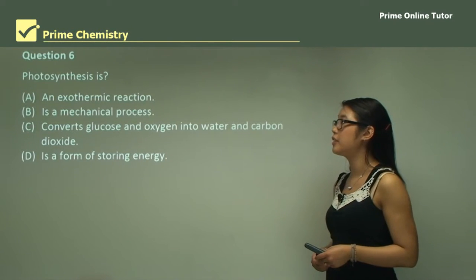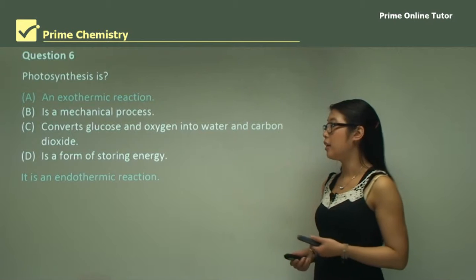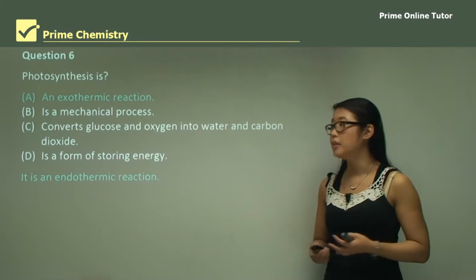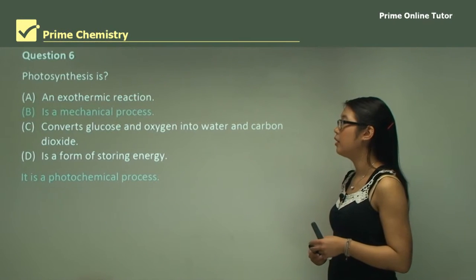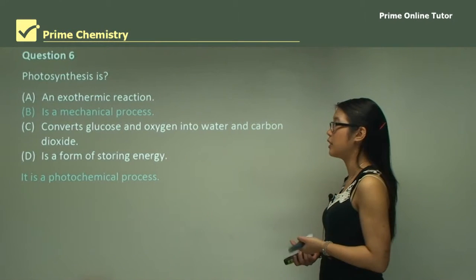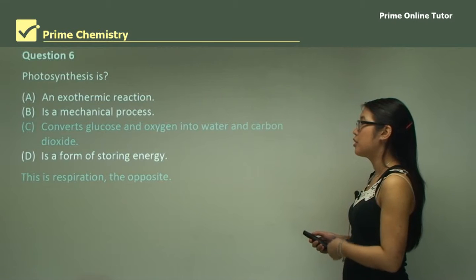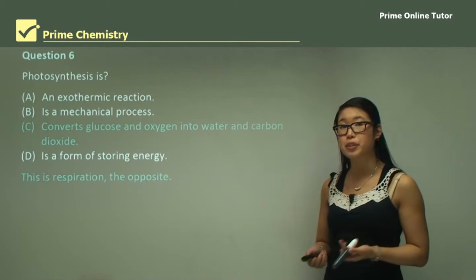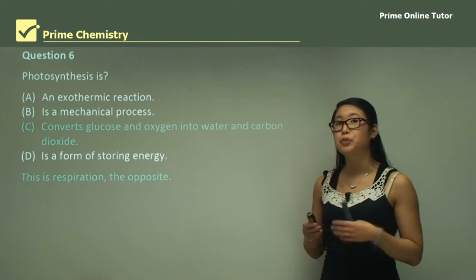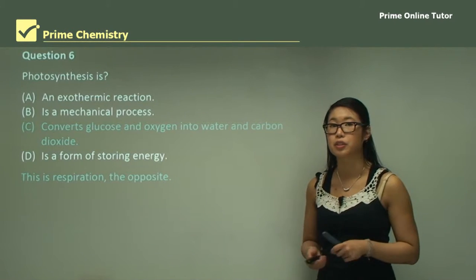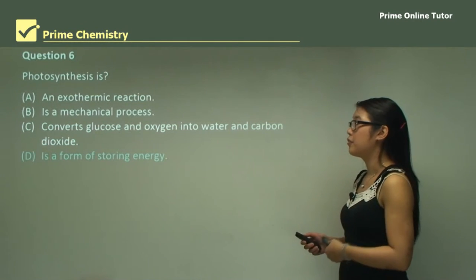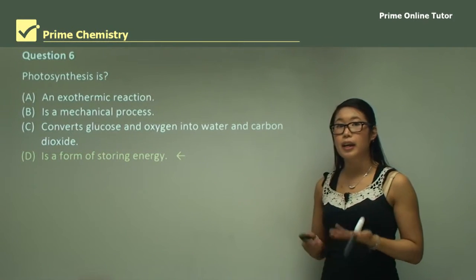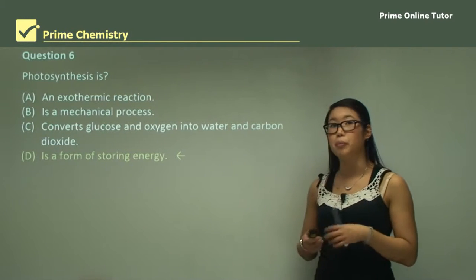Question six: is photosynthesis an exothermic reaction? No — we're taking light solar energy and using that to break bonds, so it's an endothermic reaction. Is it a mechanical process? No, it's a photochemical process. Does it convert glucose and oxygen into water and carbon dioxide? No, that is respiration, which is the opposite process — photosynthesis produces glucose, not the other way around. Is it a form of storing energy? Yes — photosynthesis forms glucose and sugars, which are a store of energy because when we break them down they release energy.